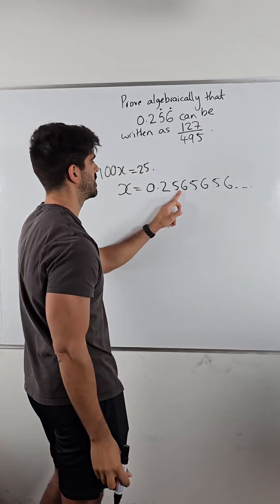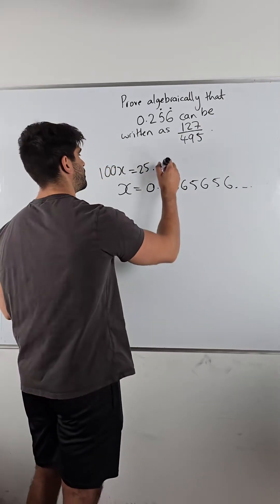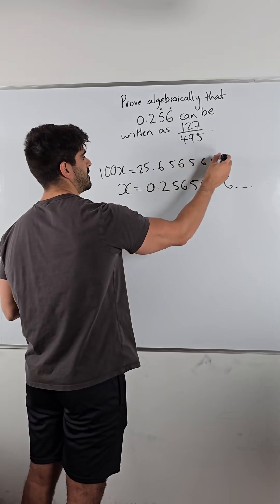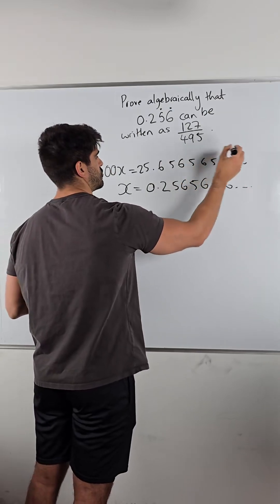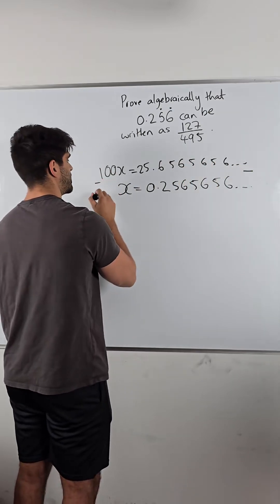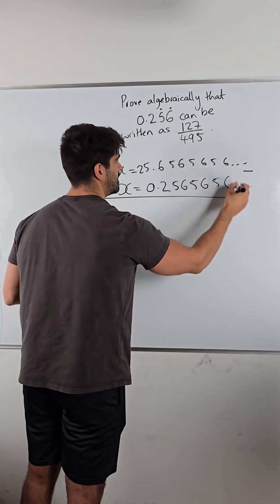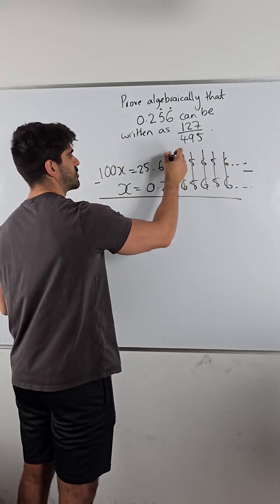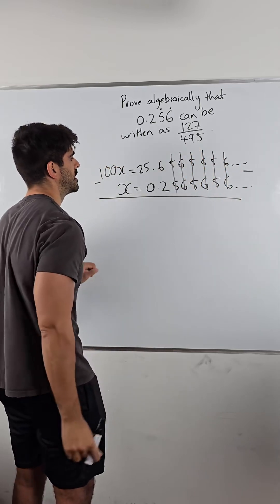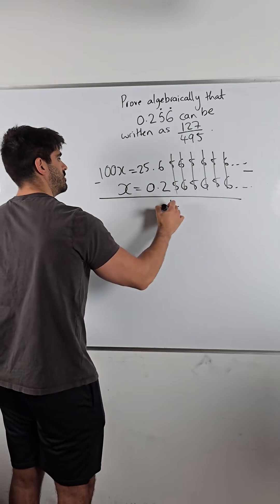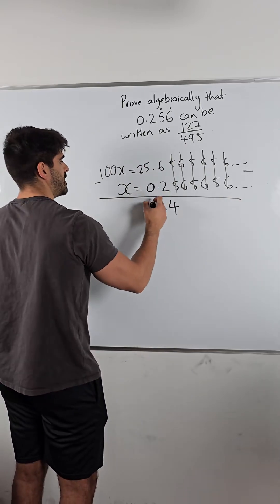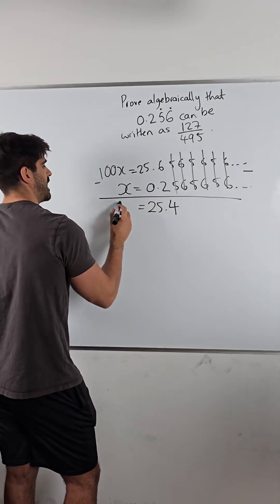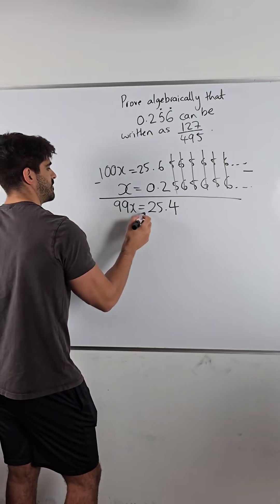So we get 25.6565656565... and then we subtract. Now we can see the recurring parts all cancel: 6 minus 2 is 4, and 25 minus 0 is 25, so we get 25.4 on the left. That gives us 99x, so we divide both sides.